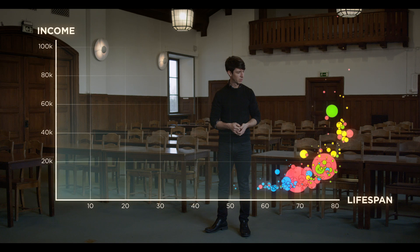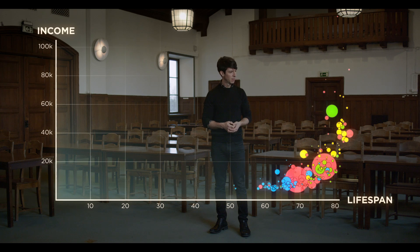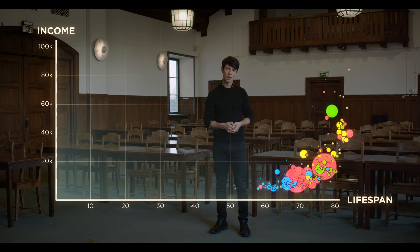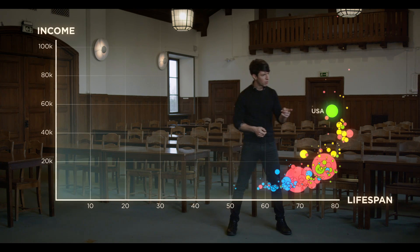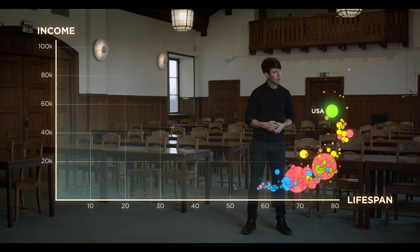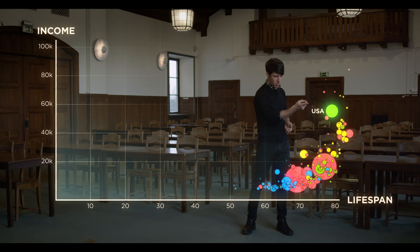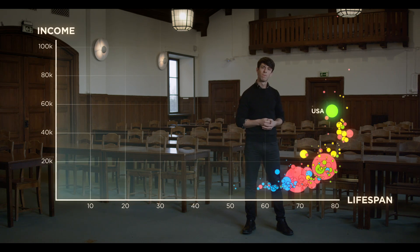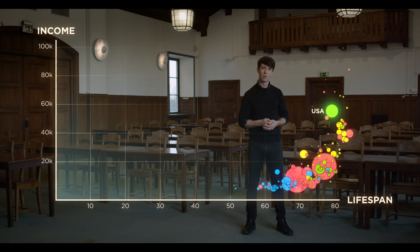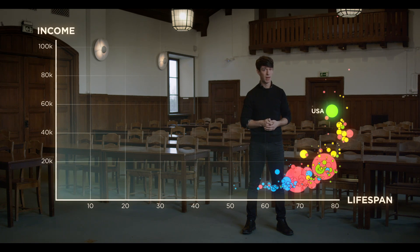Take a look at these bubbles, for instance. Is this really what the world looks like? Look at the US, at all its inhabitants, neatly packed in this small little bubble. Why is it so small? Because it represents the mean values of income and lifespan, not reality.